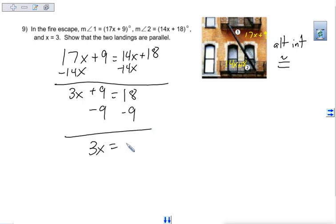And 3x equals 9. Then we can divide by 3. So x equals 3, which is what we wanted. Which means that the landings are parallel.